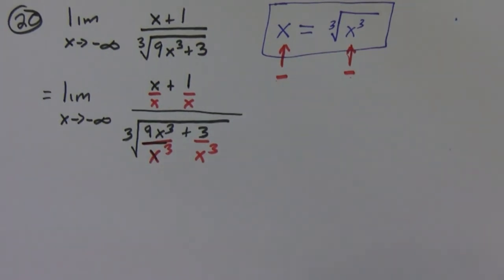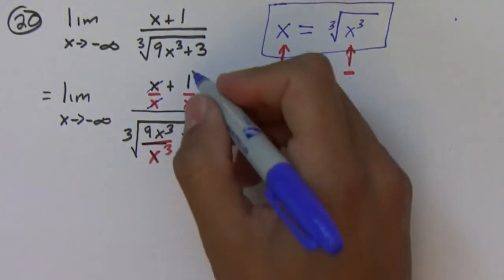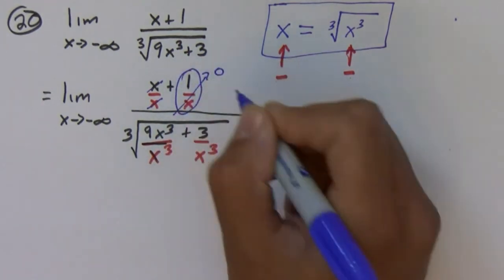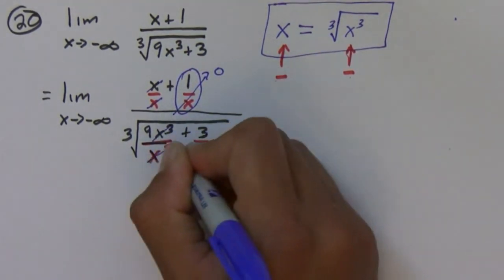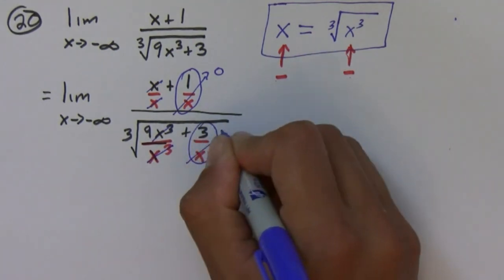All right, so now we simplify. These simplify, this guy is going to go to zero. These guys simplify and this guy is going to go to zero.